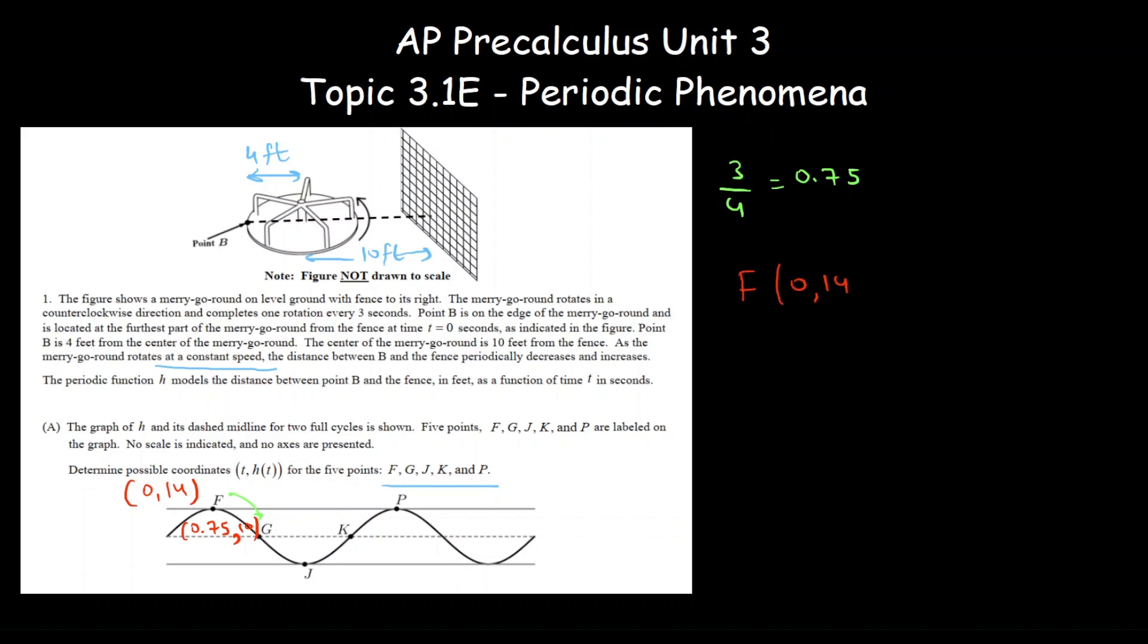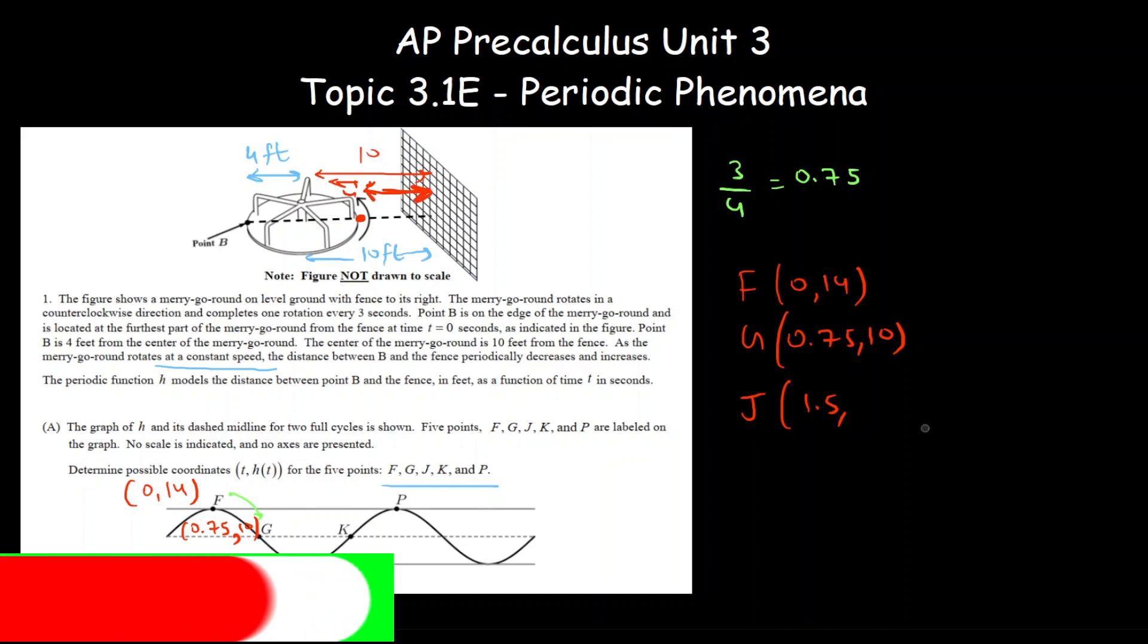F is zero comma fourteen, G is 0.75 comma ten, and J will be 1.5 comma and the minimum distance when B comes here will be ten minus four. Ten minus four is six.